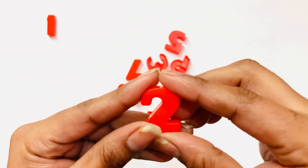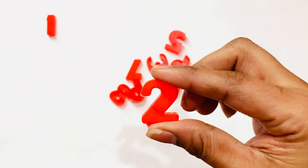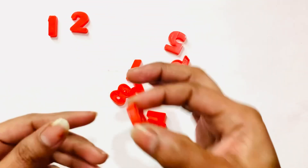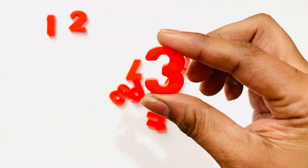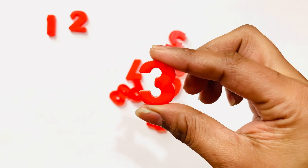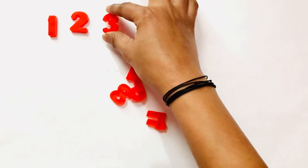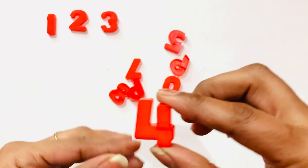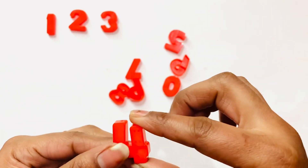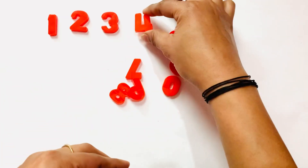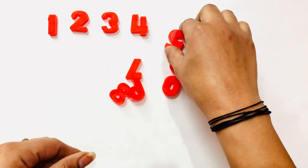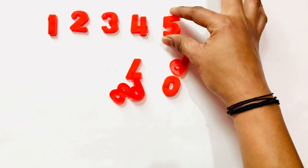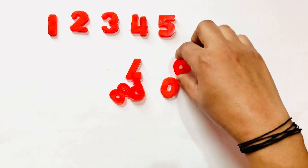Number one, next number is number two, next number is number three. I pick next number is number four, I choose next number is number five. All numbers are in red color.